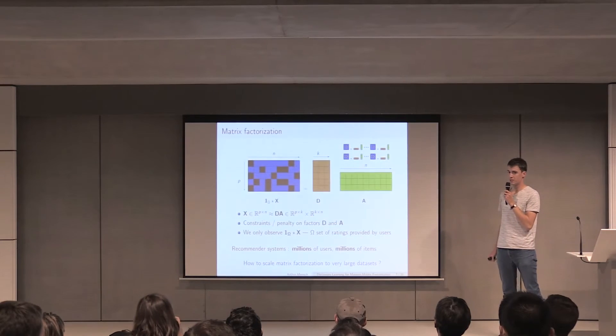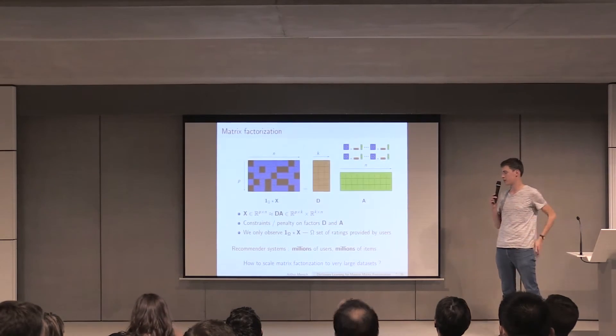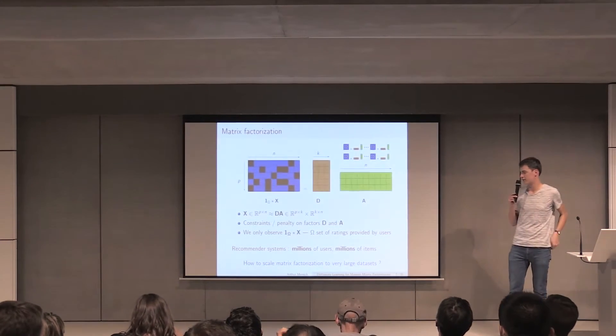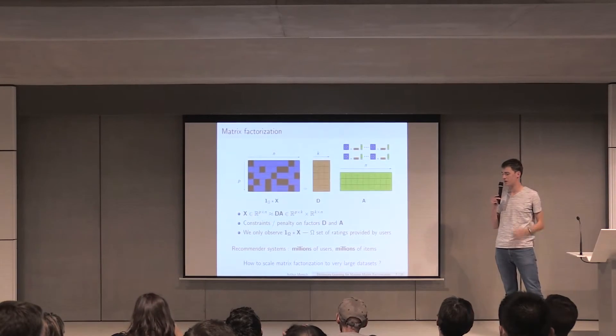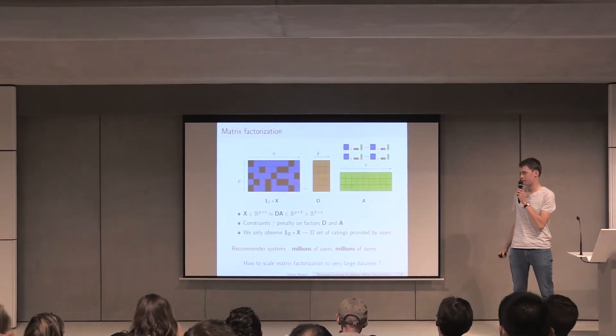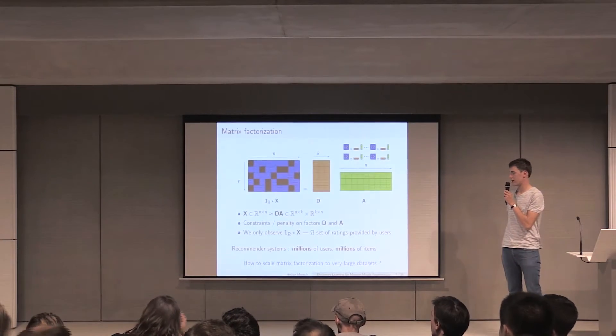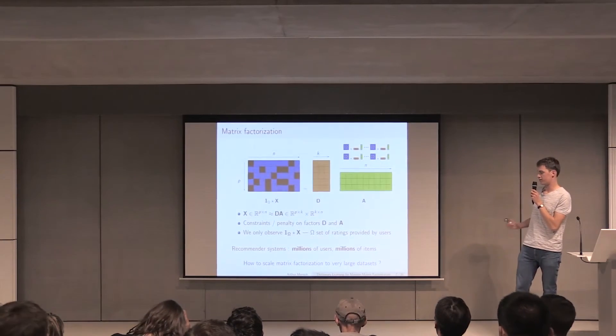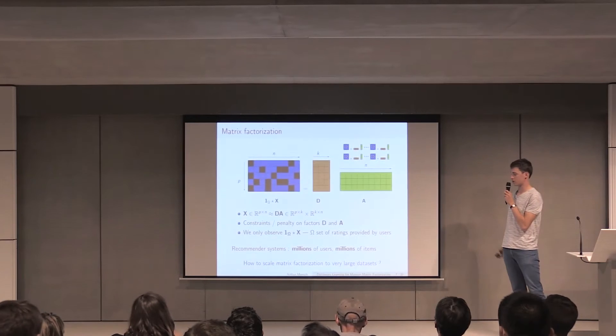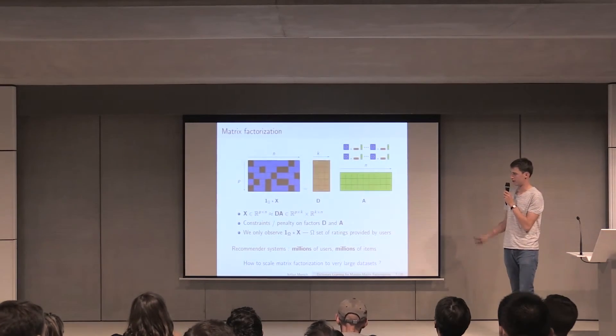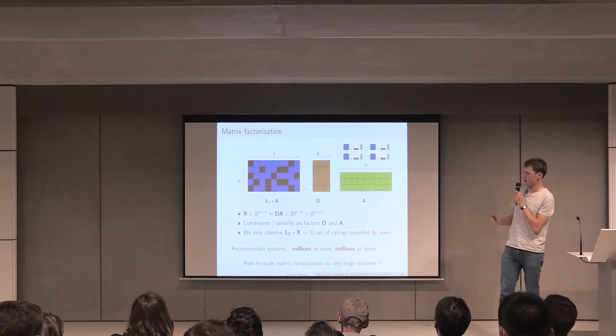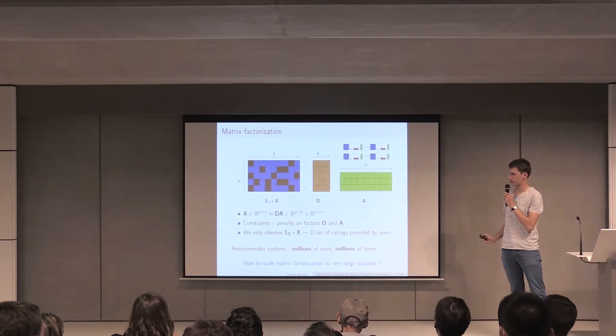In recommender systems, there are typically millions of users, millions of items, and the matrix X is very large, so you want to have methods that scale in both directions. The question we asked in this work is how to scale the matrix factorization to very large datasets, and we applied it on fMRI and on collaborative filtering.